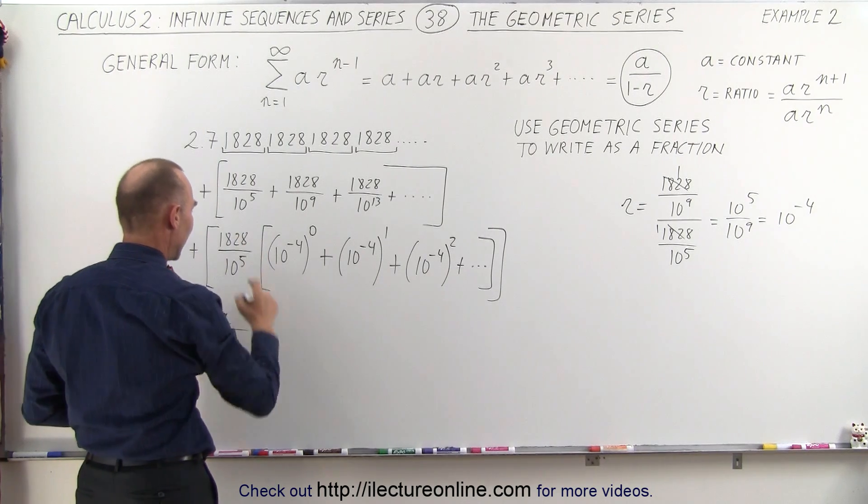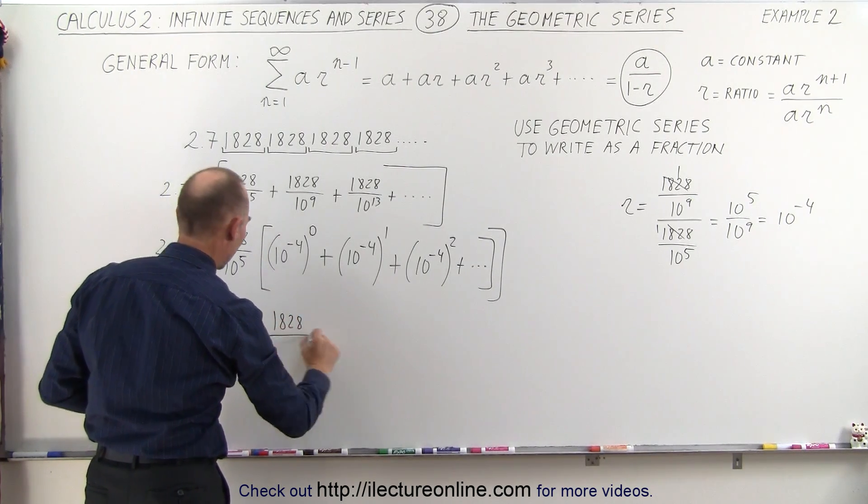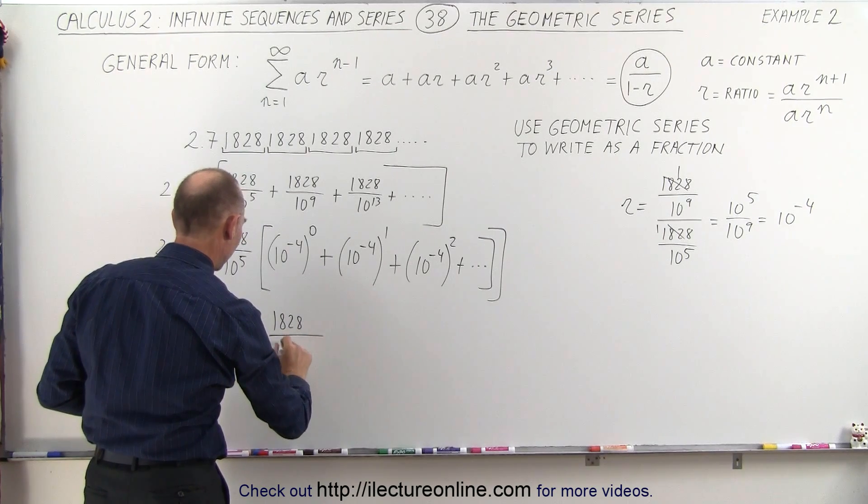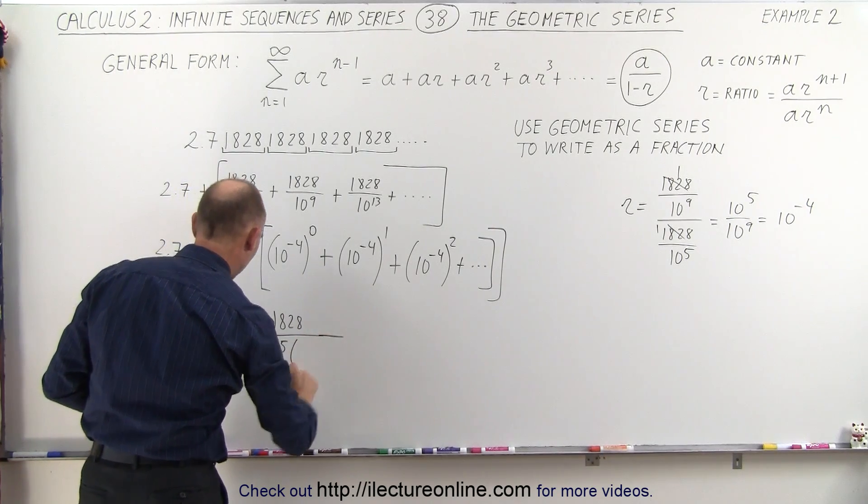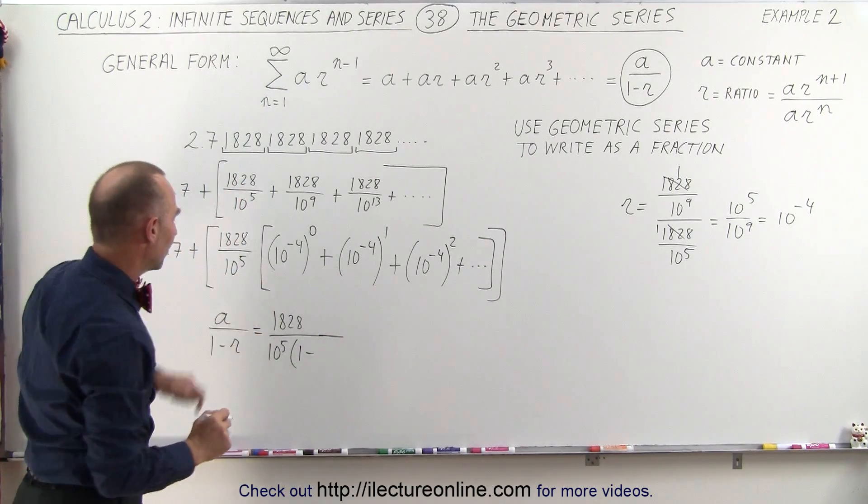A is equal to 1828 divided by 10 to the 5th. And then we have to multiply that times 1 minus and R is 10 to the minus 4.